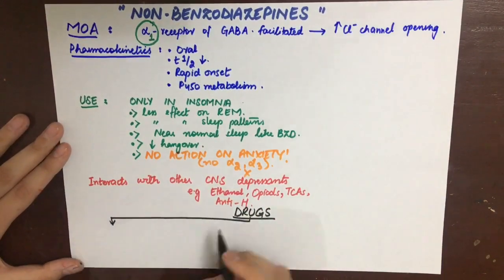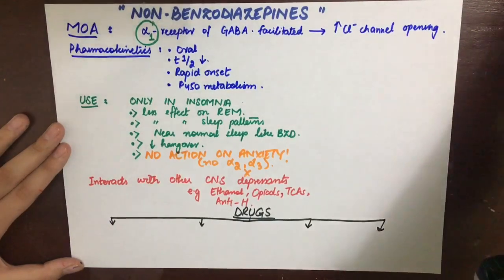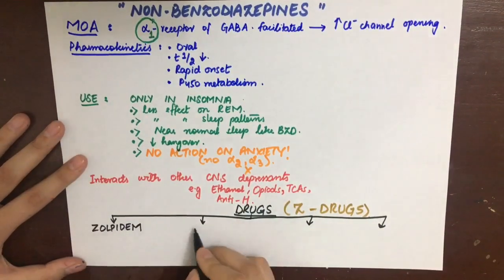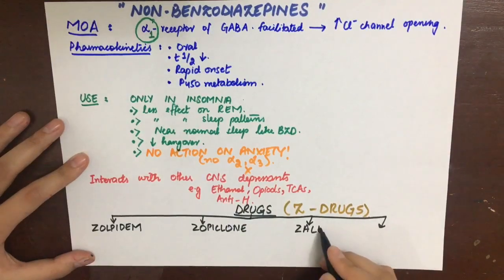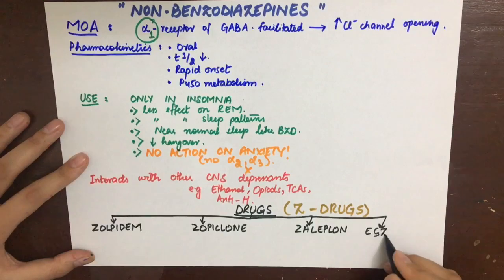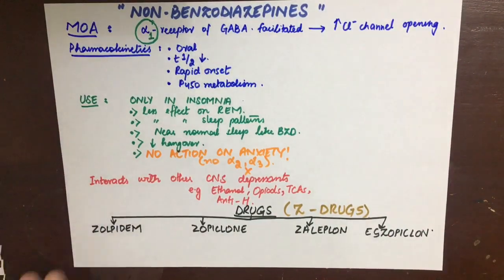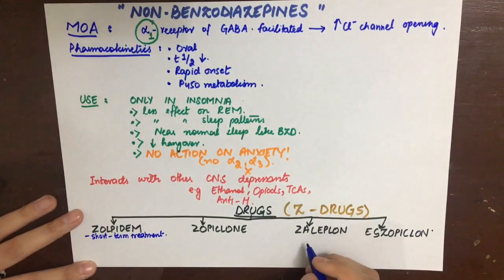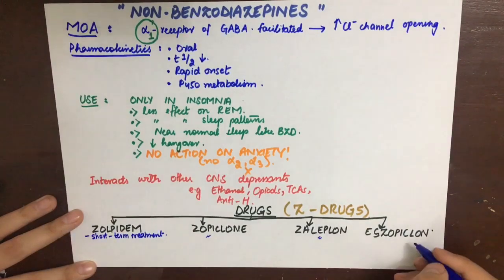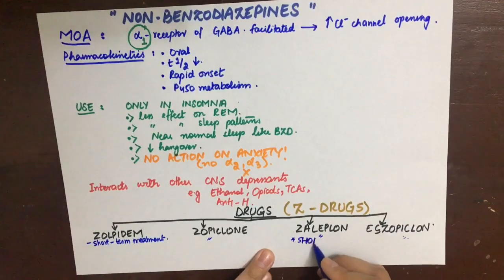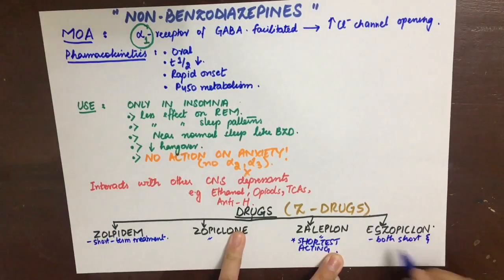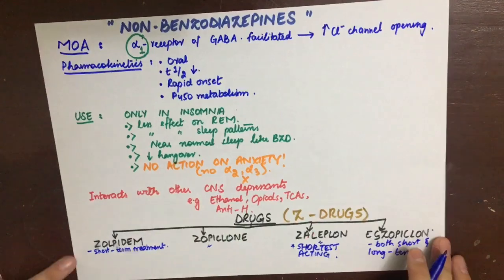The four non-benzodiazepine drugs are: zolpidem, zopiclone, zaleplon, and eszopiclone. Zolpidem, zopiclone, and zaleplon are used for short-term treatment of insomnia. Zaleplon is the shortest-acting non-benzodiazepine hypnotic, while eszopiclone can be used in both short-term and long-term therapy.